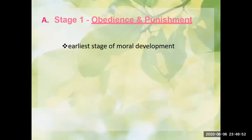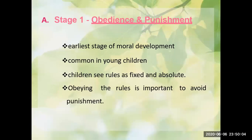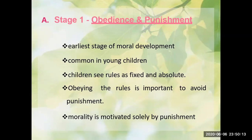The first stage of the pre-conventional level is obedience and punishment. This is the earliest stage of moral development and is common in young children. At this age, children see rules as fixed and absolute, and obeying the rules is important to avoid punishment. If students don't follow the rules, they can be punished. So in this stage, morality is motivated by punishment.